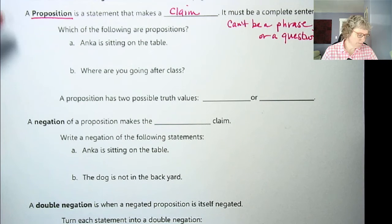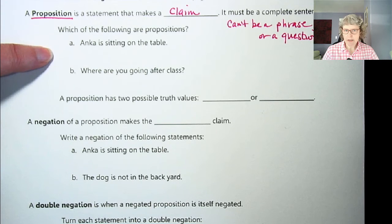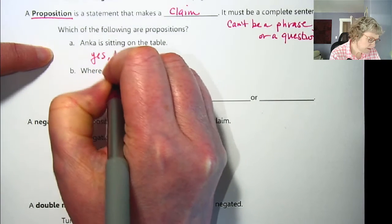So here's a couple examples. Anka is sitting on the table. Is that a proposition? That is a statement and yes, it's making a claim. We don't know if it's true or not, but she is sitting on the table. So yes, this is a proposition.